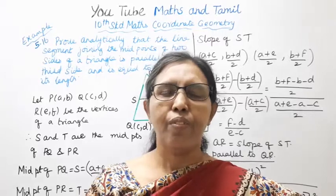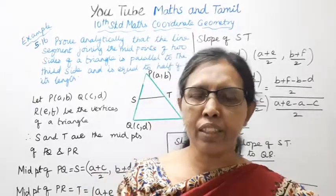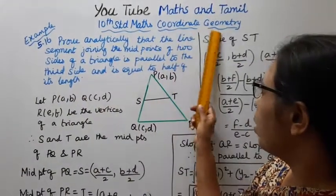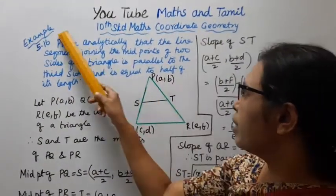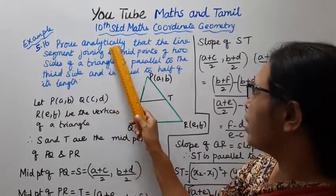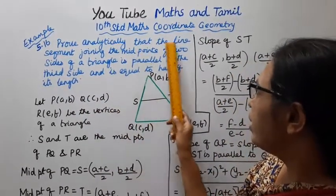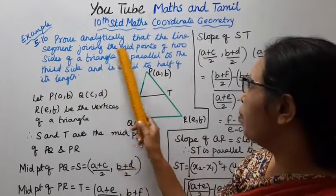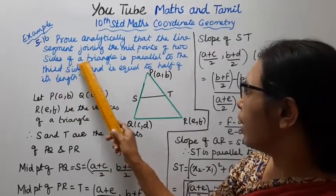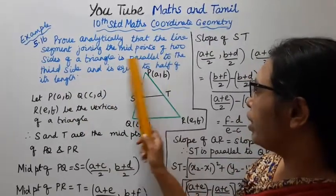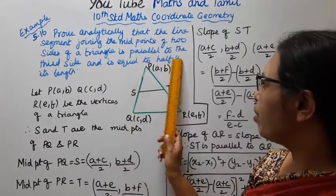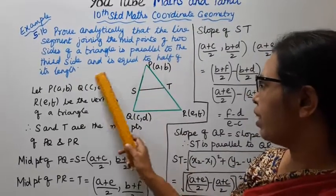Hello students, welcome to Max and Tamil channel. This is 10th Standard Maths Coordinate Geometry, Example 5.16: Prove analytically that the line segment joining the midpoints of two sides of a triangle is parallel to the third side and is equal to half of its length.